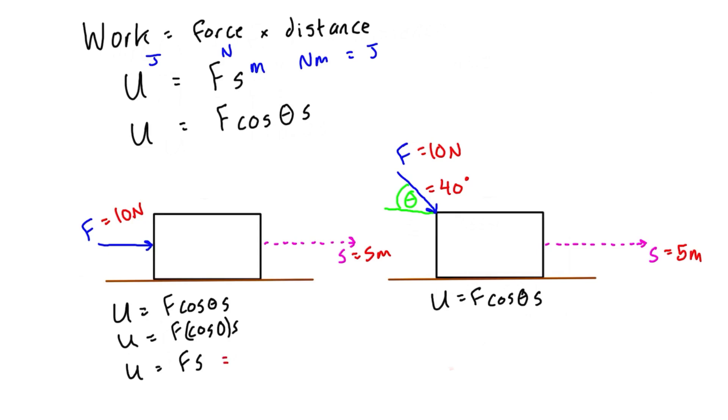In the first example where work equals F S, we have 10 newtons times 5 meters, which gives us 50 newton-meters. Newton-meters is the same as joules, so the work is 50 joules - that's the work done by the force on the object.